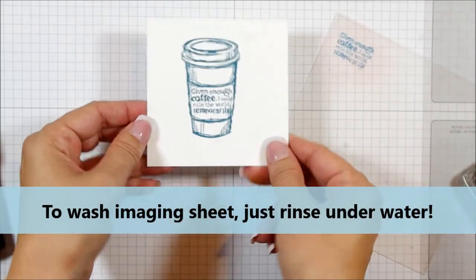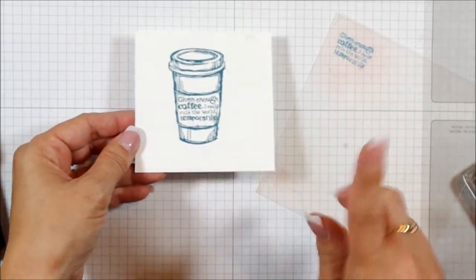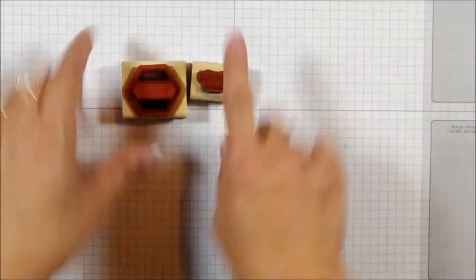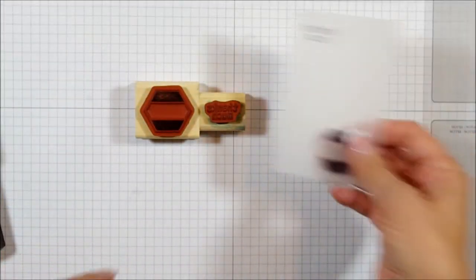So that makes it super easy to line up your stamps exactly where you want them to be. Now I'm going to show you another tip using the wood stamps. Because the wood stamps don't come off their blocks, there's actually something else that you can do instead of using the imaging sheet.